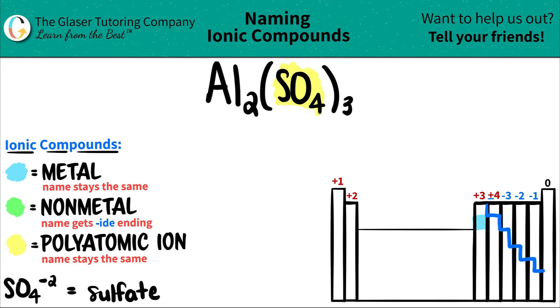Anything to the left are metals except for hydrogen. So aluminum is always going to be a metal.